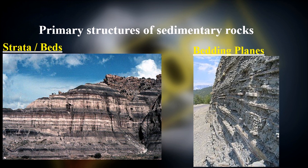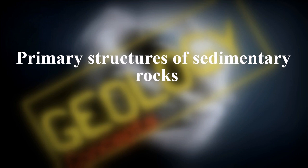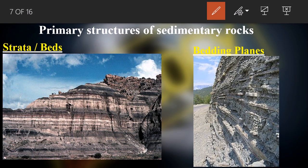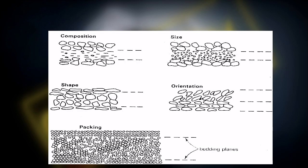Moving into primary structures of sedimentary rocks, we start with strata and bedding planes. The law of uniformitarianism states that bedding planes are always initially horizontal — deposition is always horizontal. Bedding planes are the planes along which deposition takes place, visible as parallel surfaces in cross-section. Sediments are deposited in a horizontal fashion.